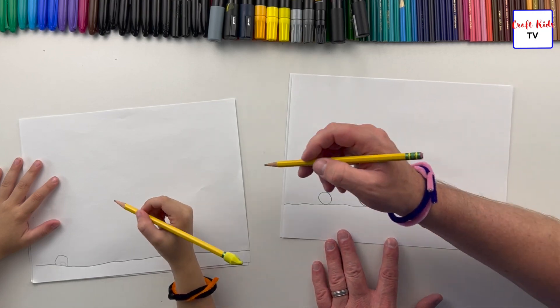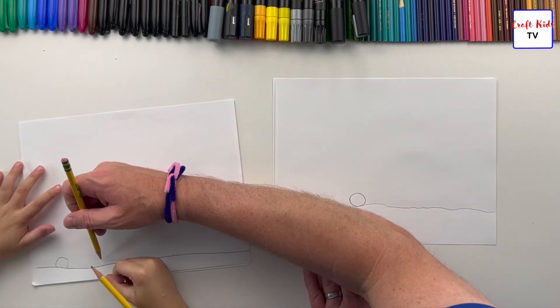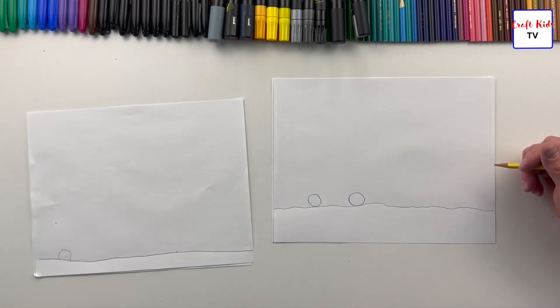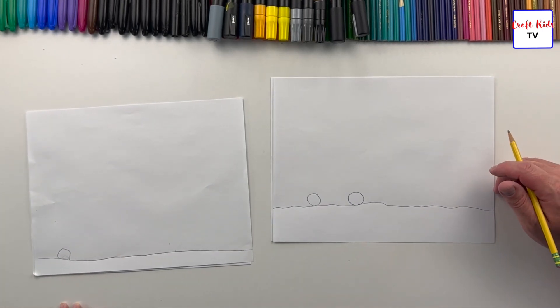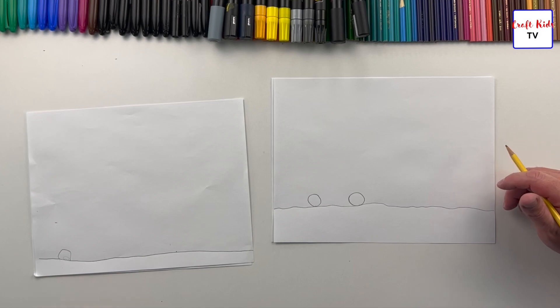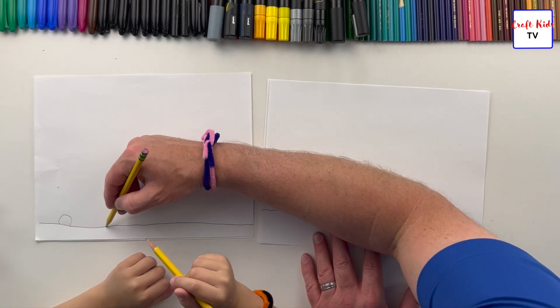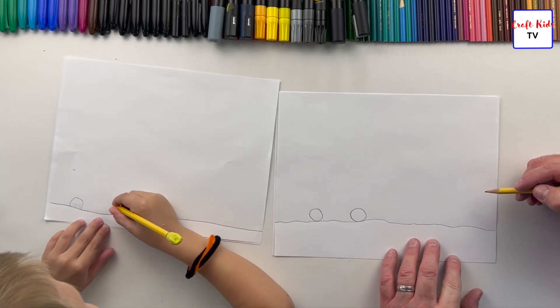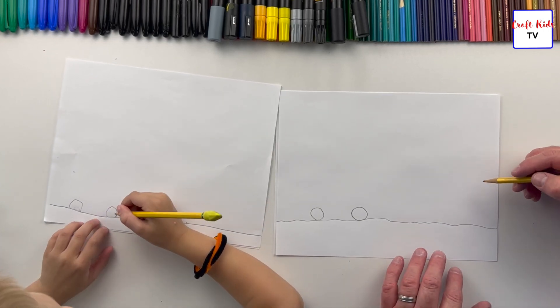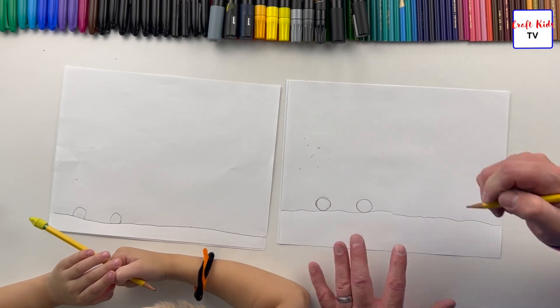Right about here, draw another circle. Use the force, Luke. Draw your next circle right about here. Good job. Now we got our two circles.